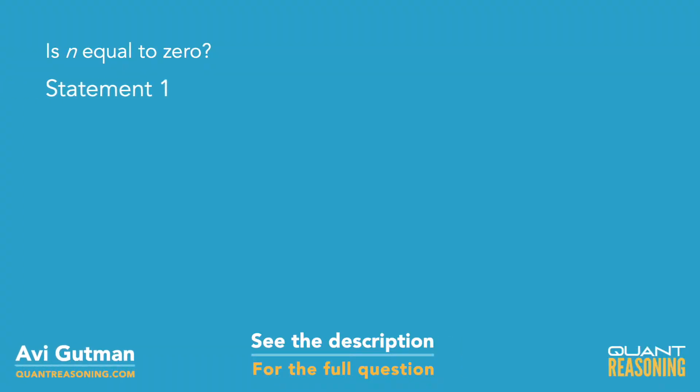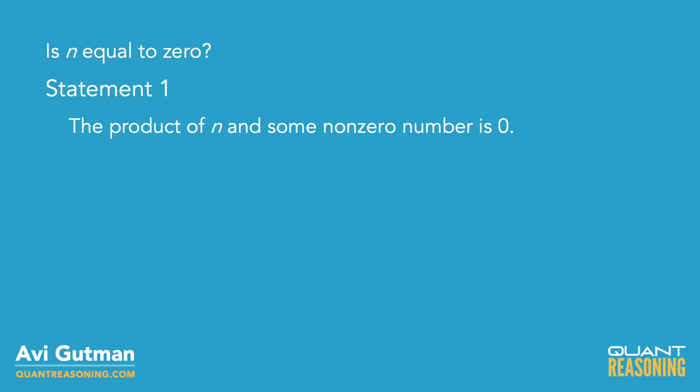Now Statement 1 tells us that the product of n and some nonzero number is 0. And I'm thinking, well, the only way that a product of two numbers is 0 is if at least one of them is 0.